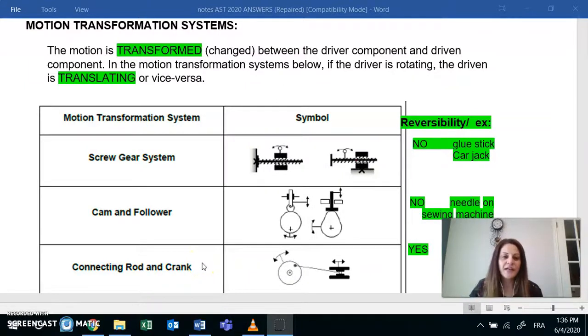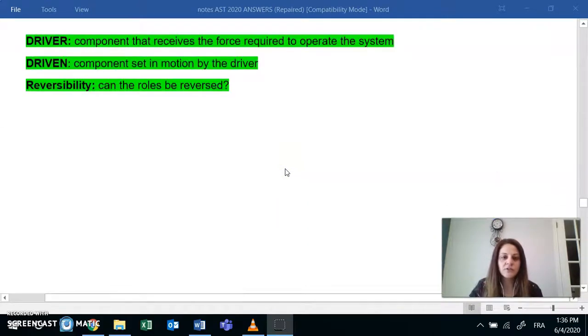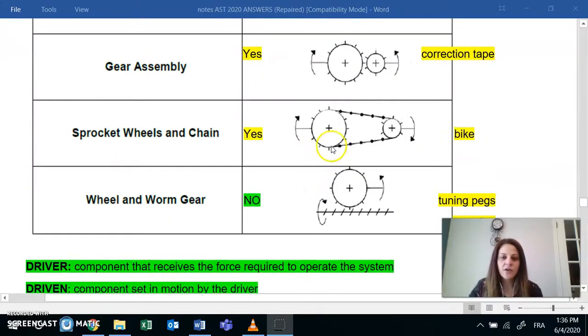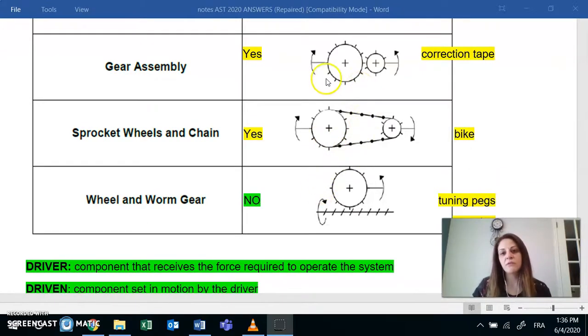Good afternoon, everyone. We'll be looking at motion transformation systems for this time. If we look at what we did last time, we saw that a motion transmission system, the motion is transmitted throughout the system. It's the same type of motion that goes from one item to the next, or one component to the next.